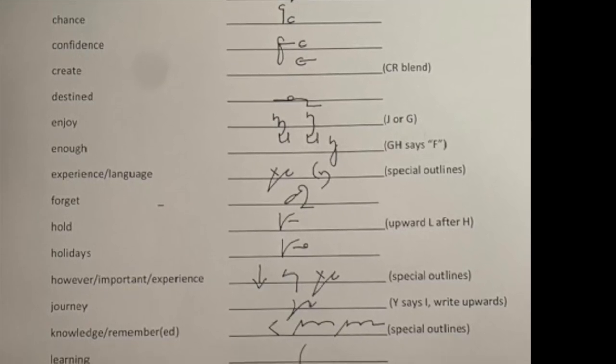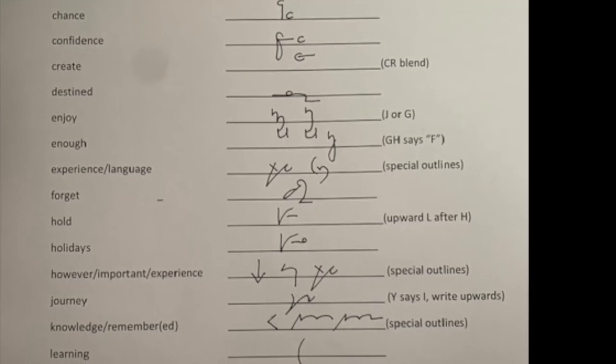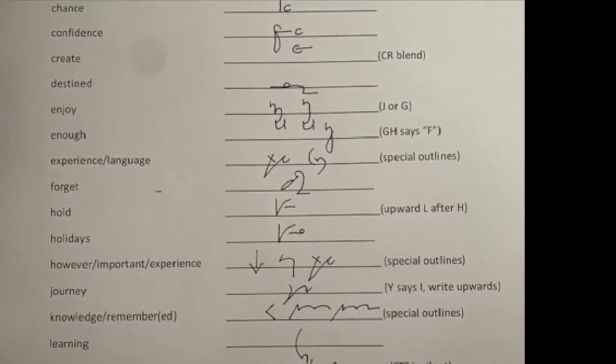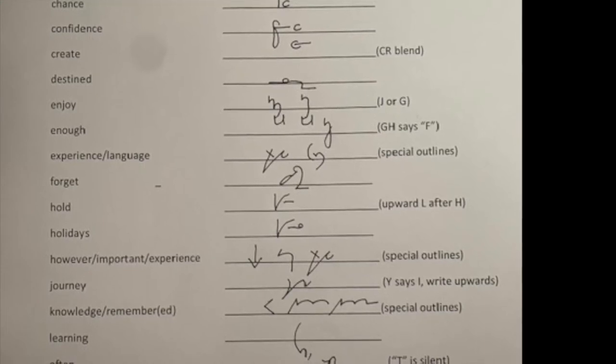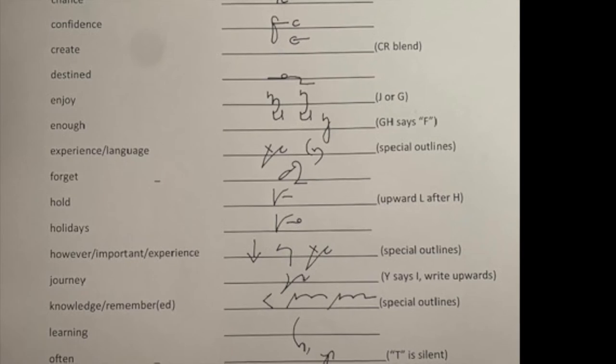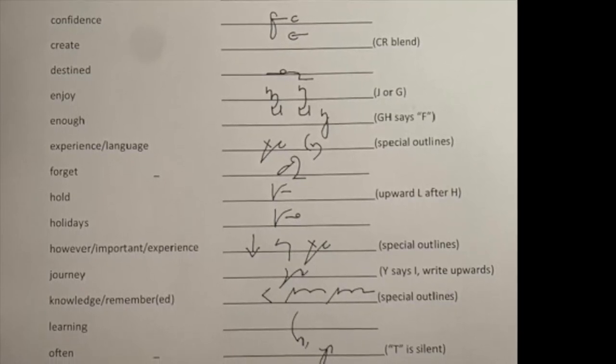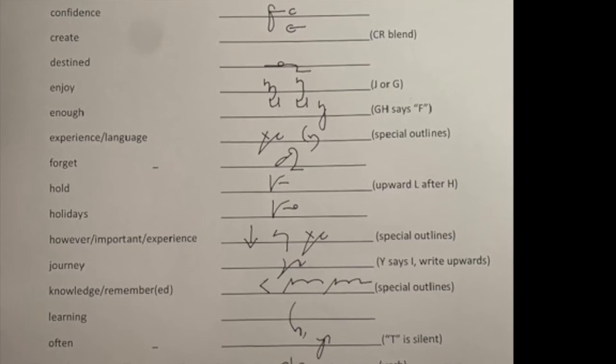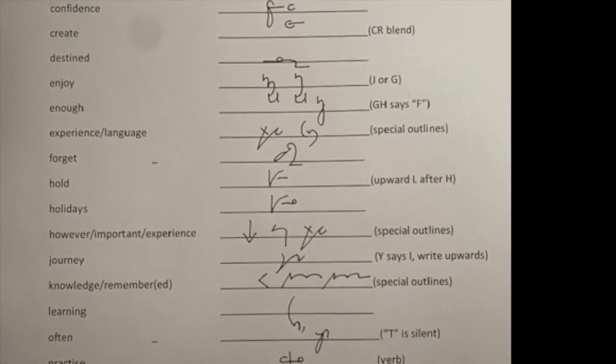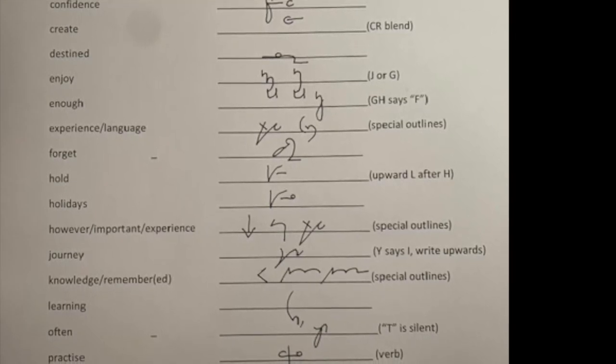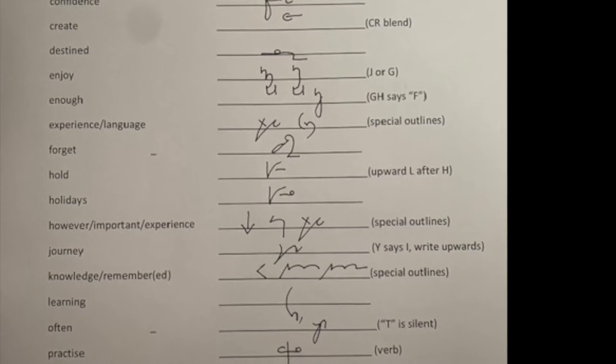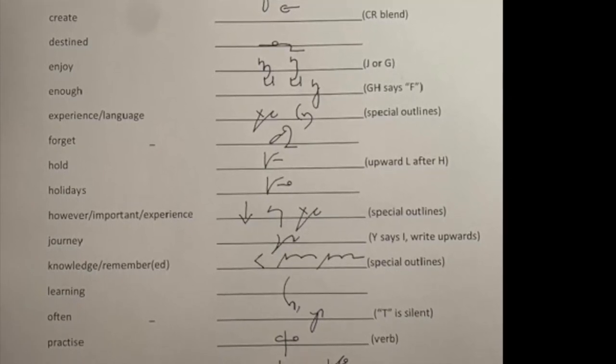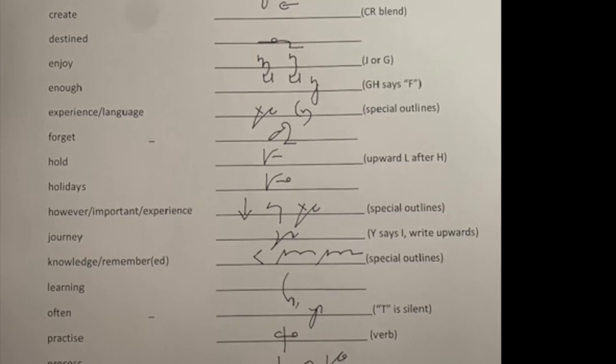Two special outlines next. Experience and language. Now although experience ends with the sound of uns, because it's a special outline, we're joining it on. Special outlines don't have any rhyme or reason. We just learn them in a parrot fashion way. Next word, forget. FR blend, GT. Hold and holidays. Remember the L goes upwards after an H and the D is disjoined. So those two words could say hold and holds. But of course the sense of the sentence will tell us that the second one is holidays. So I've now written however as a special outline, important as a special outline and in error, I've written experience yet again. Never mind, it's better than missing it out. The more practice, the better.